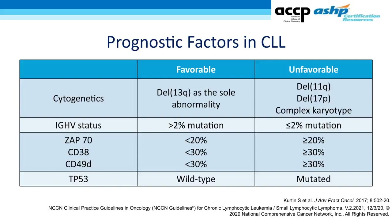To summarize the prognostic markers: favorable factors include deletion 13q as the sole abnormality, mutated IGHV status, low levels of ZAP70 and CD38, and wild-type TP53. Unfavorable factors include deletion 11q, deletion 17p, unmutated IGHV, high levels of ZAP70 and CD38, and mutated TP53.